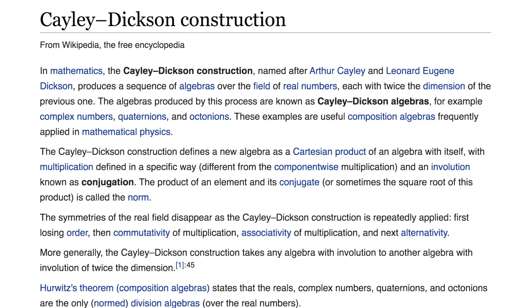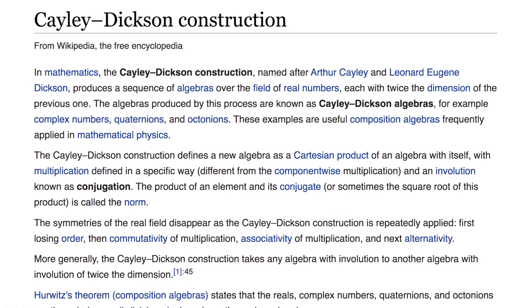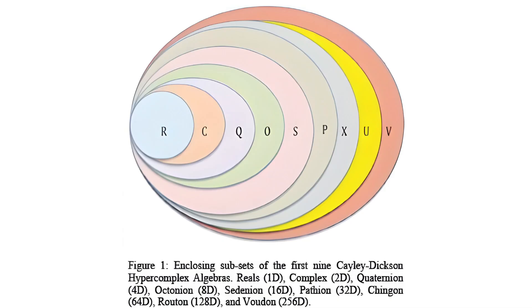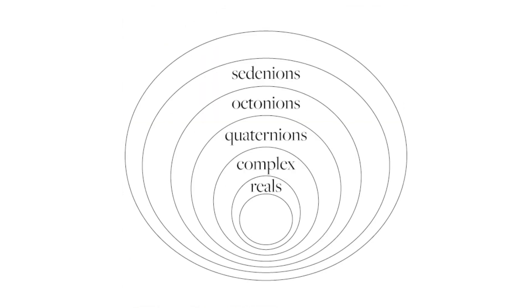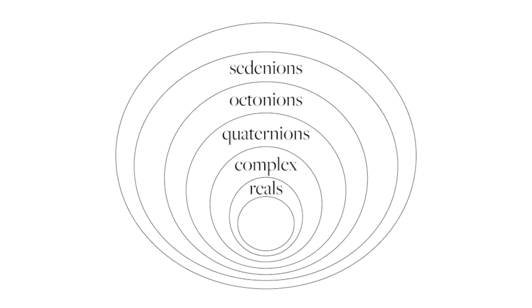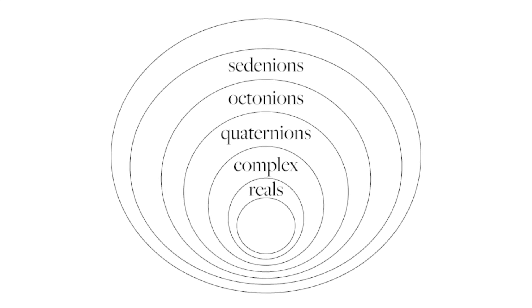In mathematics, the Cayley-Dickson construction, named after Arthur Cayley and Leonard Dixon, produces a sequence of algebras over a field of real numbers, each with twice the dimension of the previous one. The number of filaments nested inside of filaments nested inside of filaments is a Cayley-Dickson construction.